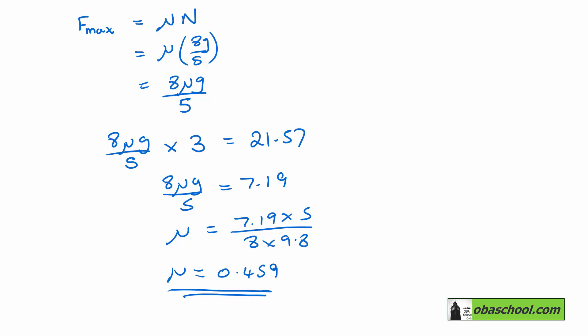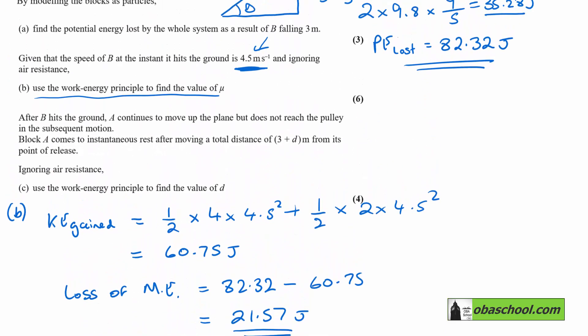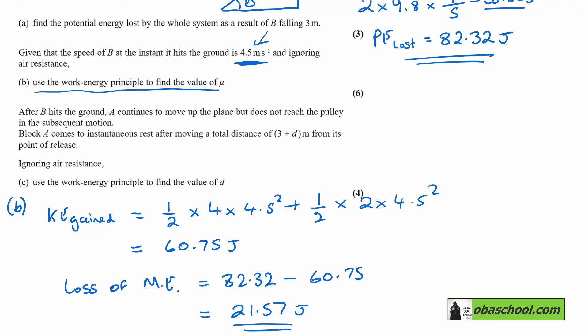Let's go back to the question. After B hits the ground, A continues to move up the plane, but does not reach the pulley in the subsequent motion. Block A comes to instantaneous rest after moving a total distance of 3 plus D. Well, the 3 is what it moved while block B was dropping. What we're trying to find here is D, which is the subsequent distance that it goes up when it's just moving freely. And there'll be a resistive force. It says, ignoring air resistance, use the work energy principle to find the value of D.